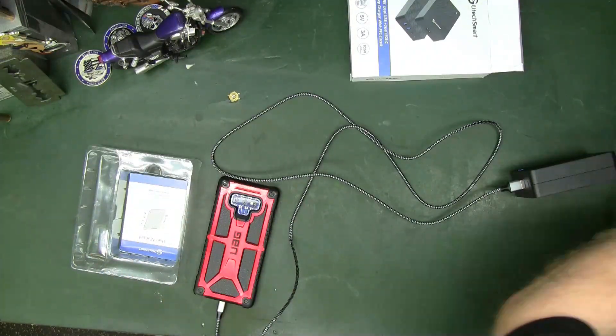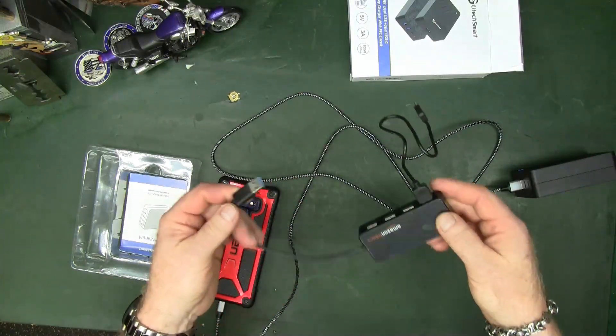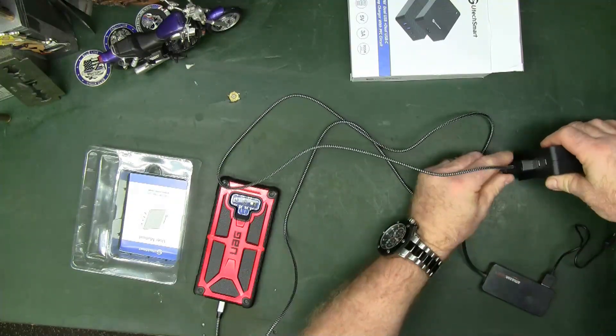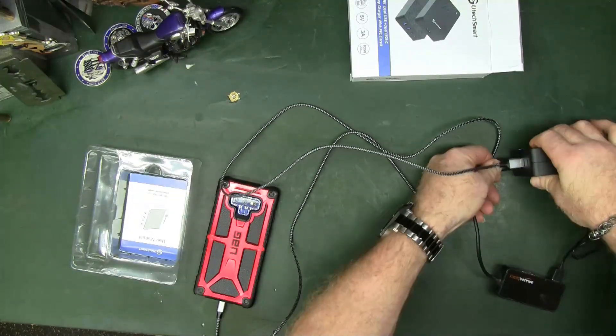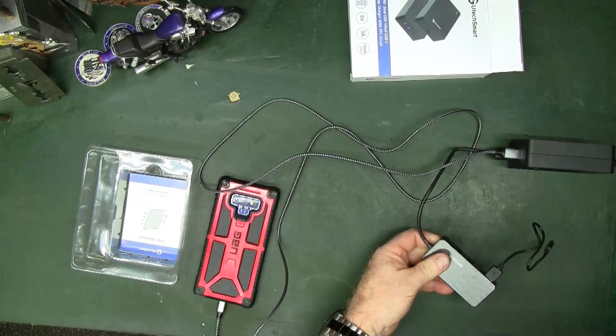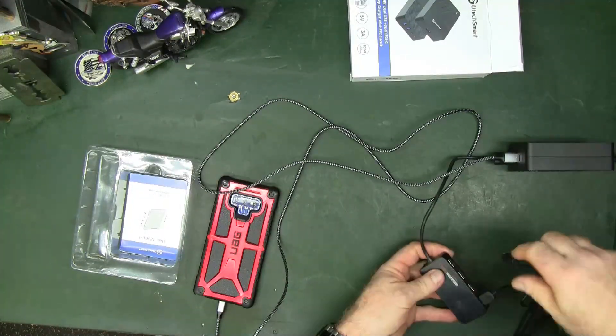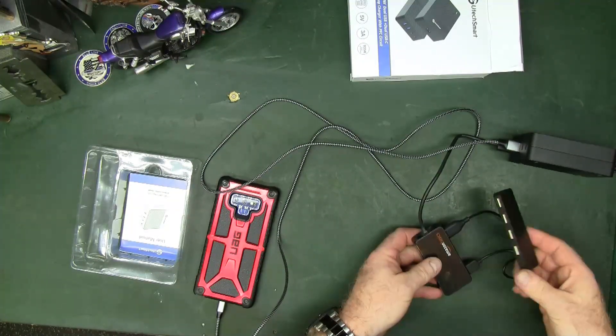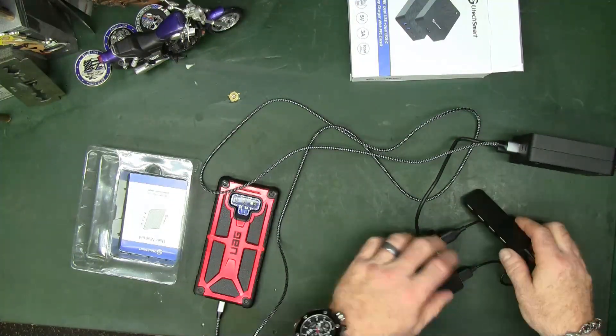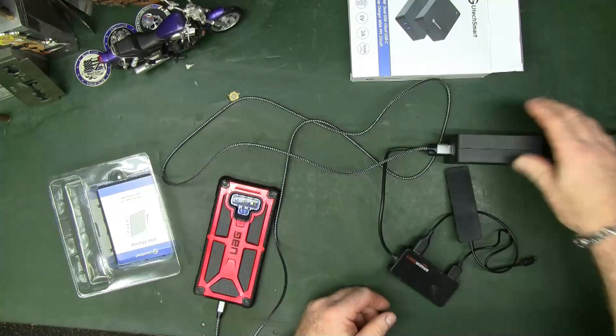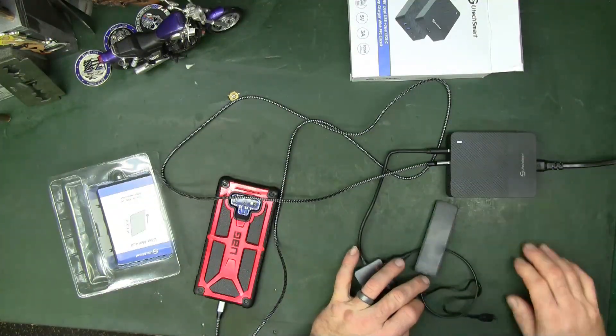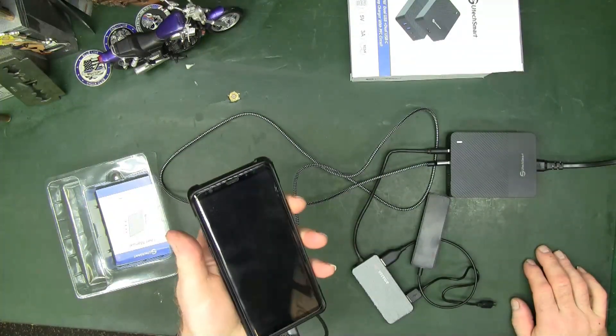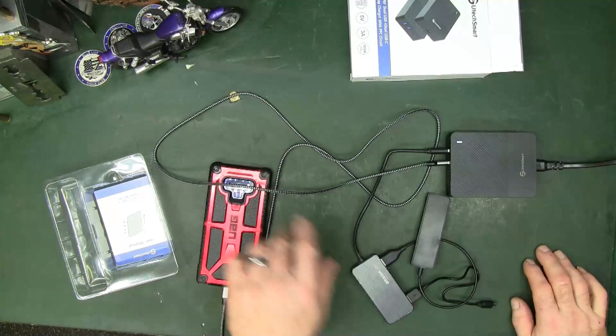And then just to up the ante, I went with some of these Amazon Basic multi-ports. So I was able to just keep putting ports together and putting multiple things on this guy to see if I could get to the point where even the phone started showing that it was no longer rapid charging. And I just could not do it.